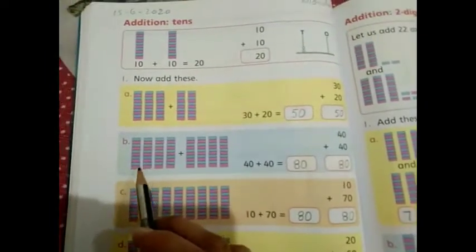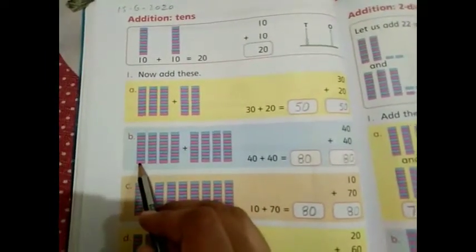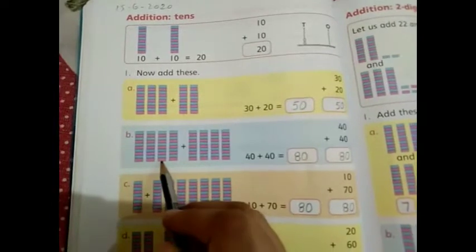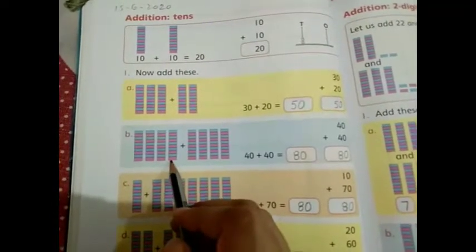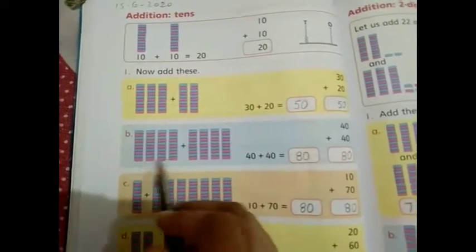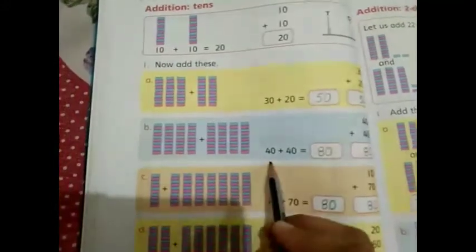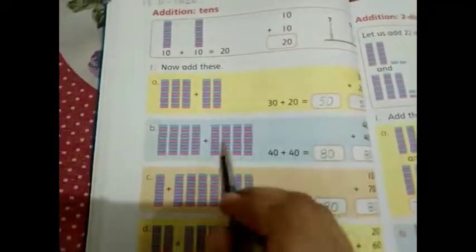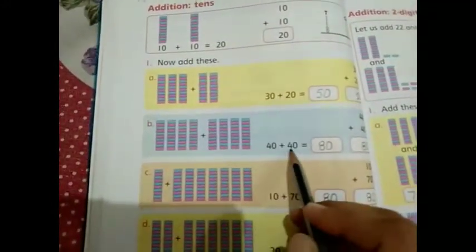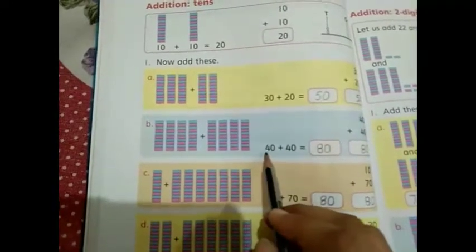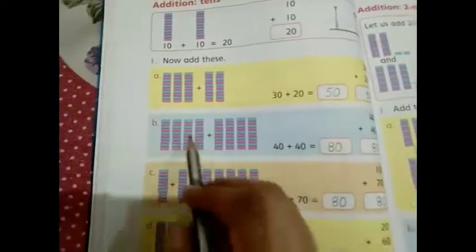With the same procedure, let's start part B. 10, 20, 30, 40. These are 4 bars, which means 40. Plus these are again 4 bars, so it is also equal to 40. 40 plus 40, we have to add these numbers.